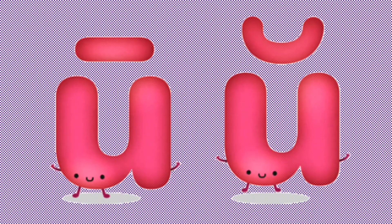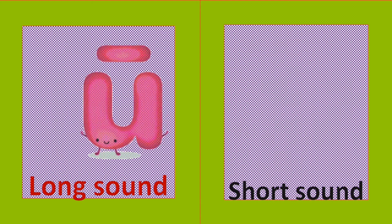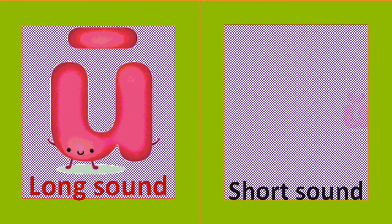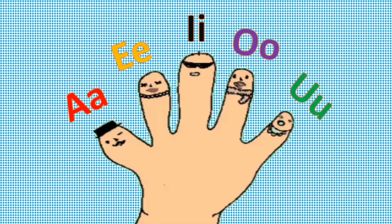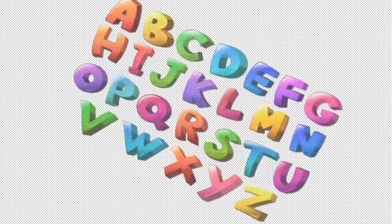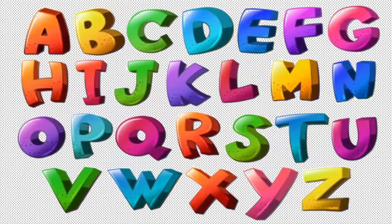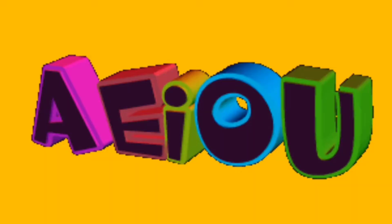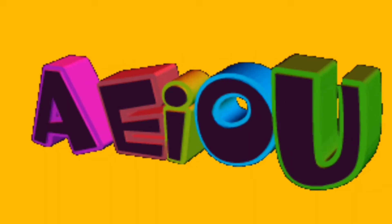Meet the U. Here is U. There is A. Here is U. There is A. Here we have five vowels. In the English alphabet, here we have five vowels: A, E, I, O, U.